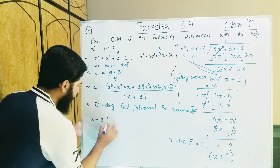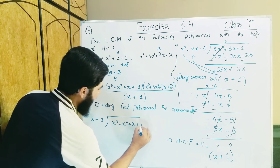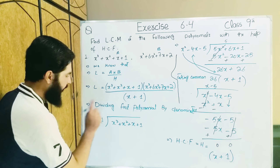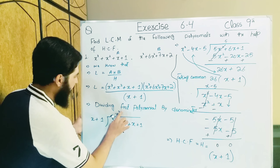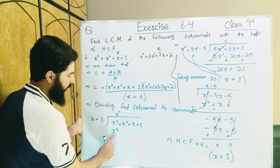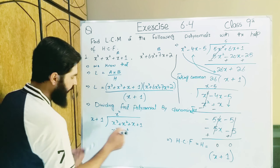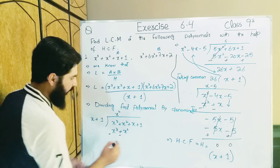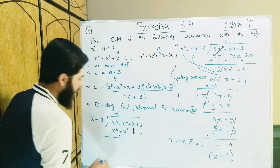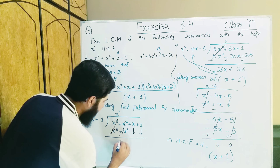We write x + 1 outside. What value do we write that multiplied with x gives x³? Since 1x is there, write x² — then x × x² = x³. Minus sign changes: positive becomes minus. Values come down same as they are. Positive and negative cancel, positive and negative cancel — what remains is x + 1.